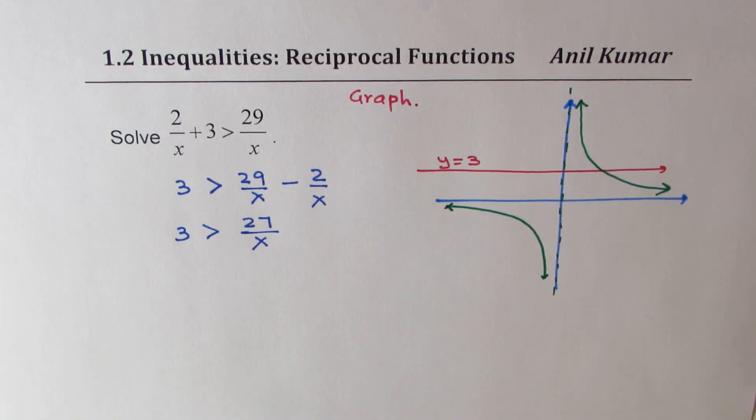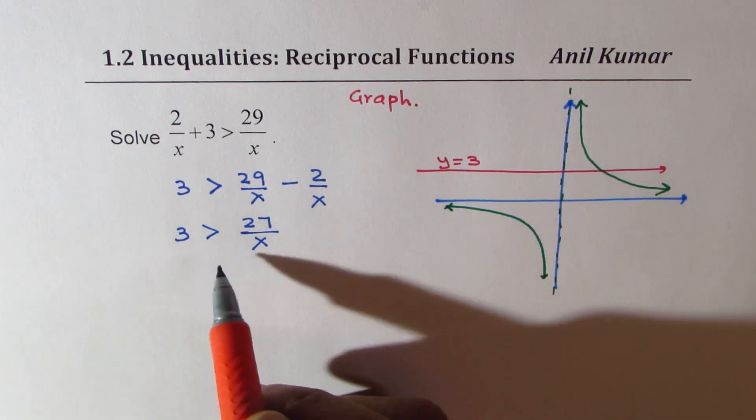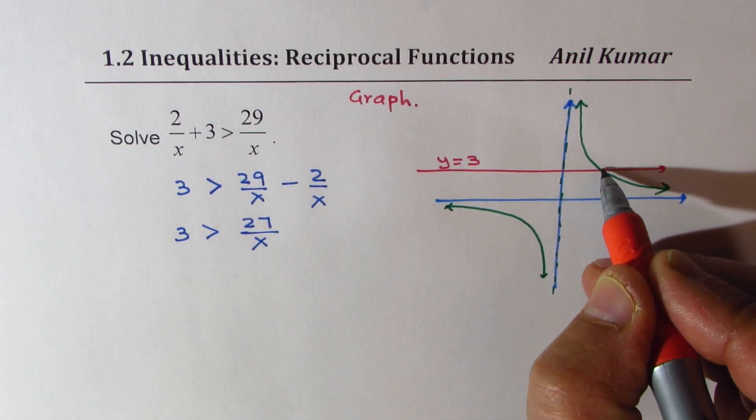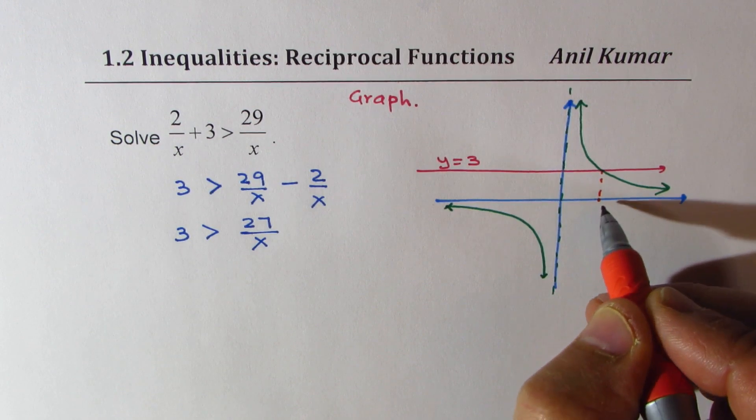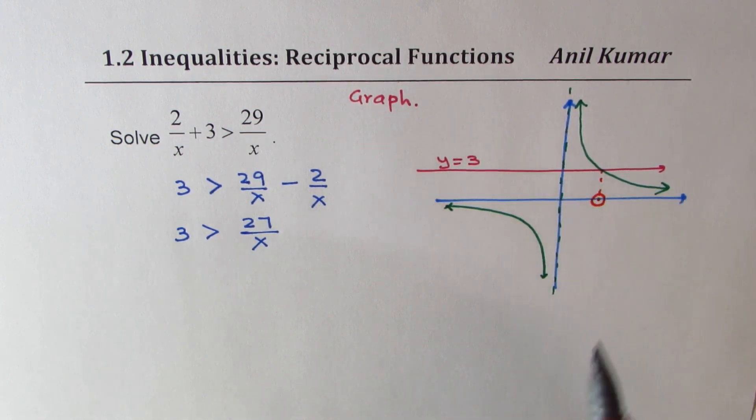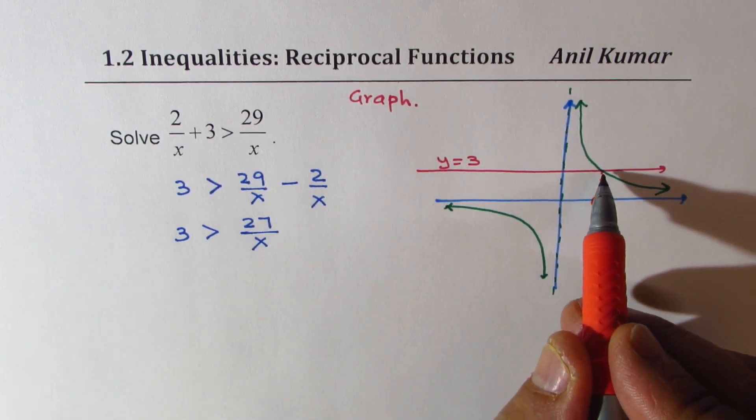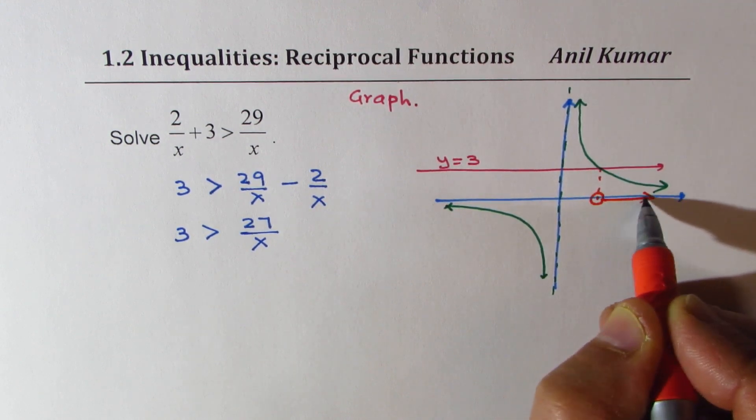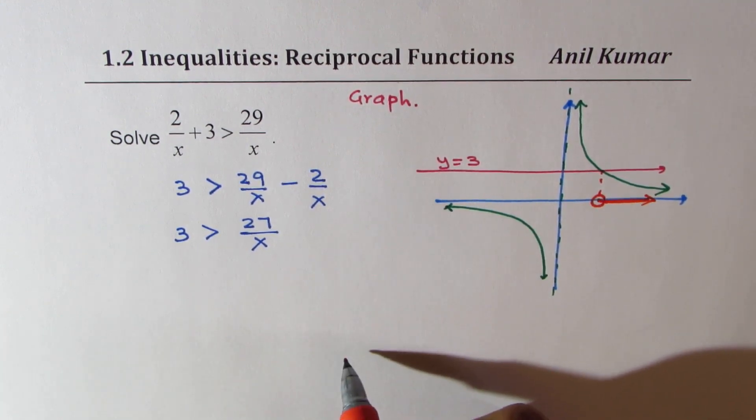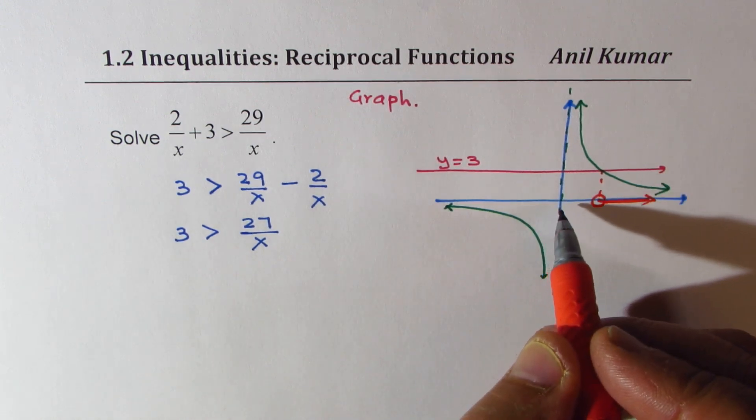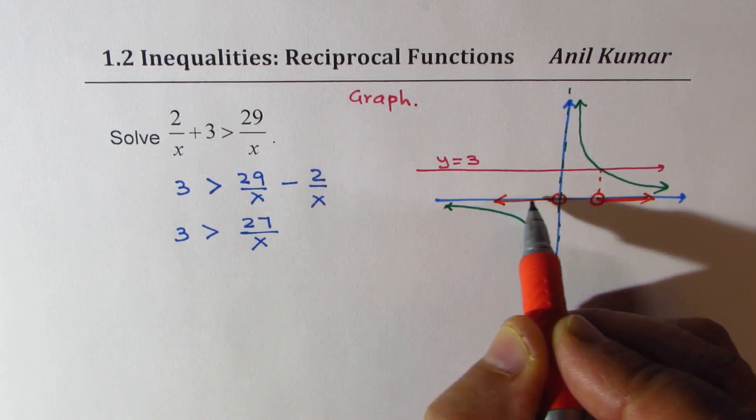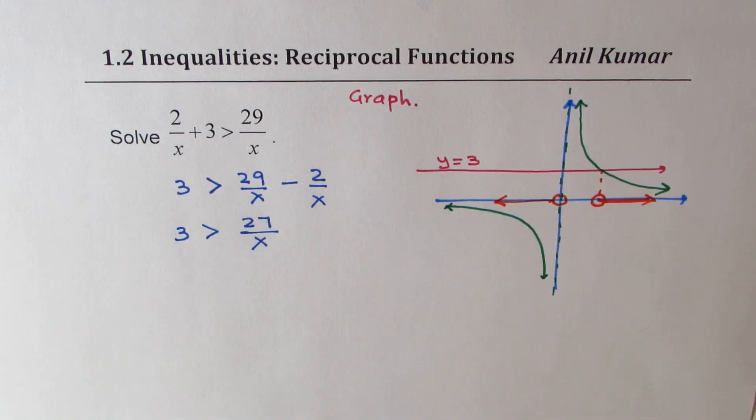Now from the graph, we have a clear solution. We want this line to be above the graph of the reciprocal function. That is, we have to find what this point is. Once we find this point, then we know the line is above the graph on the right side of this point and from 0 onwards to the left side. So that becomes the solution.